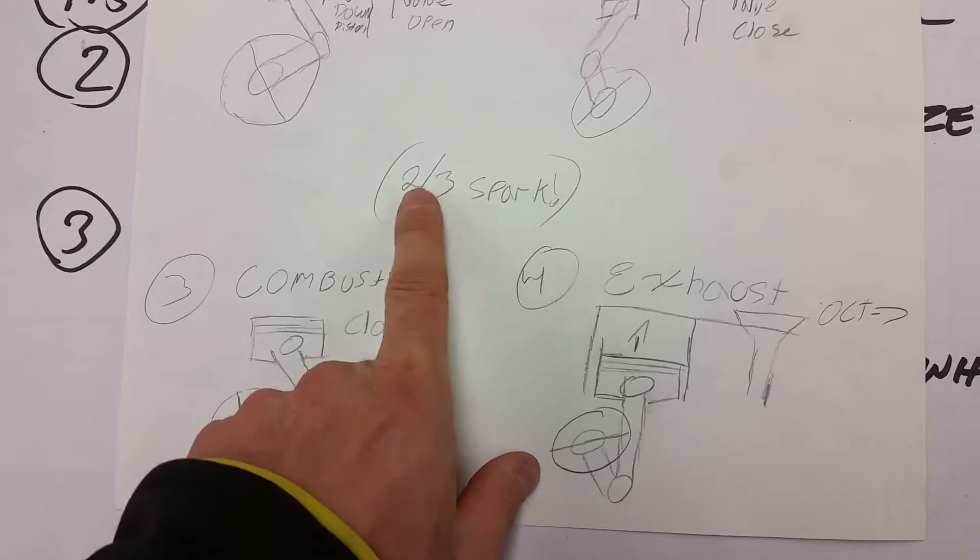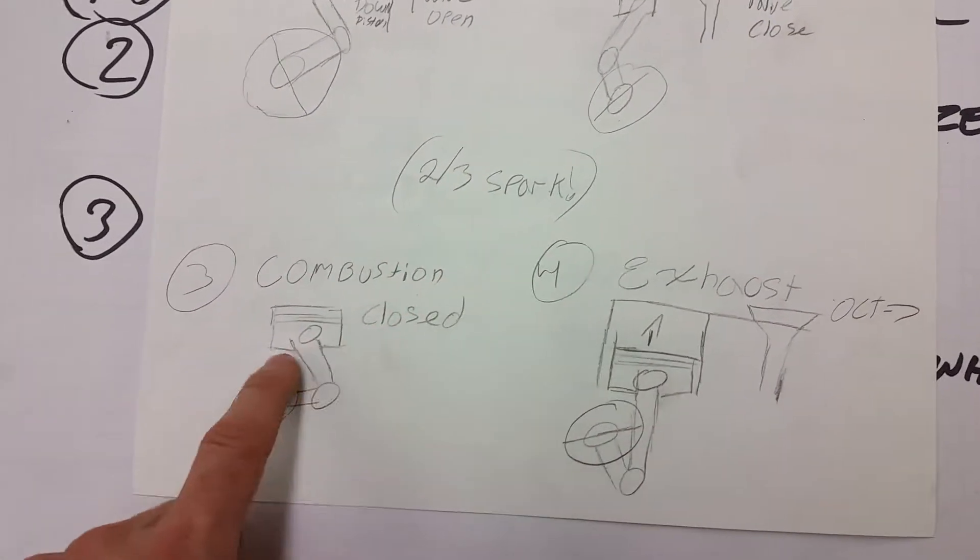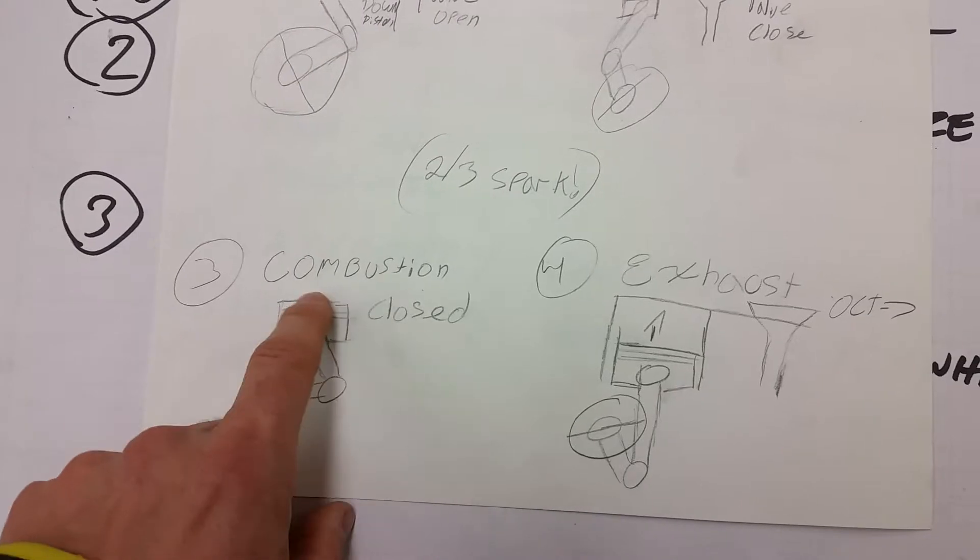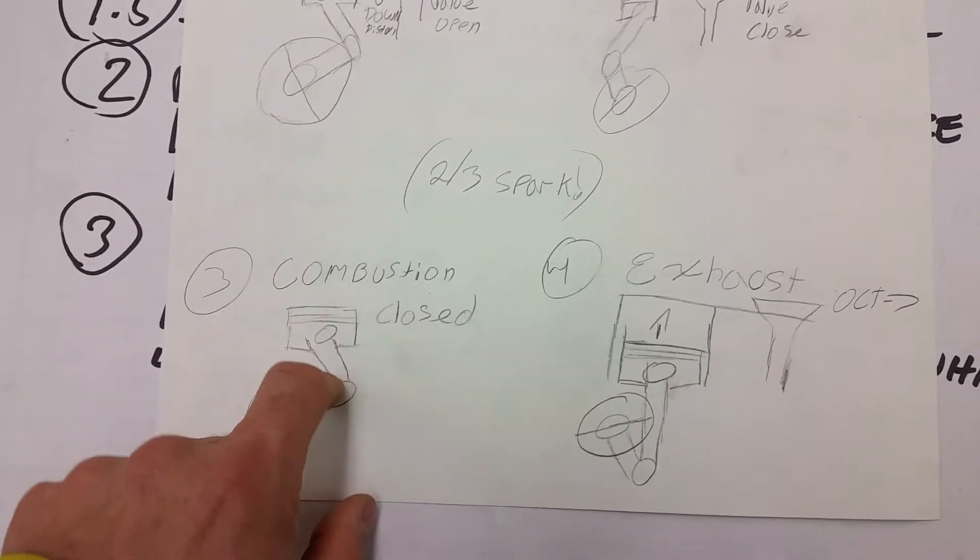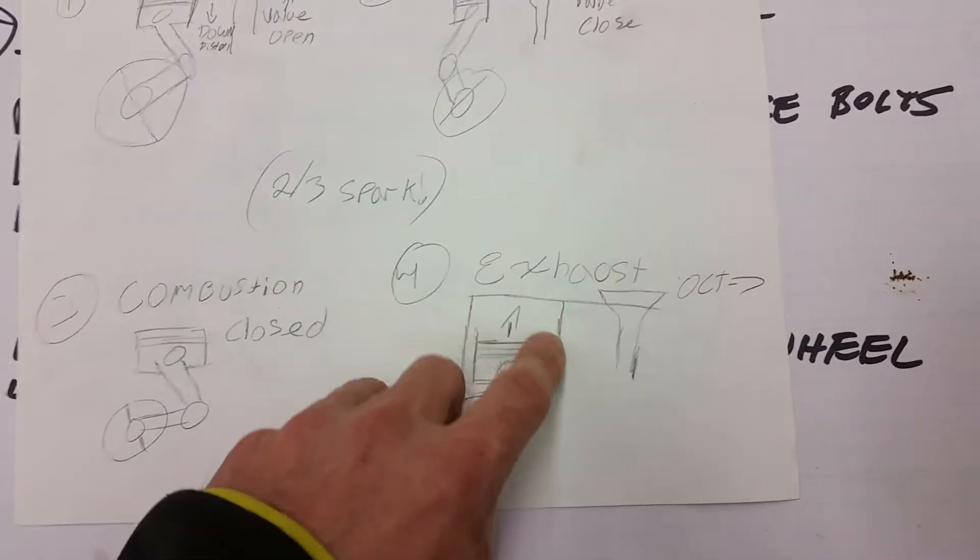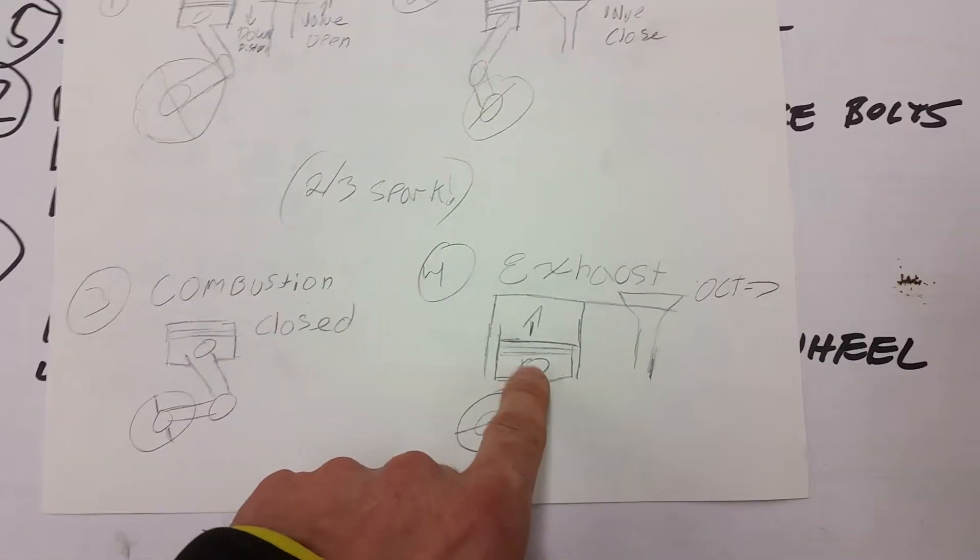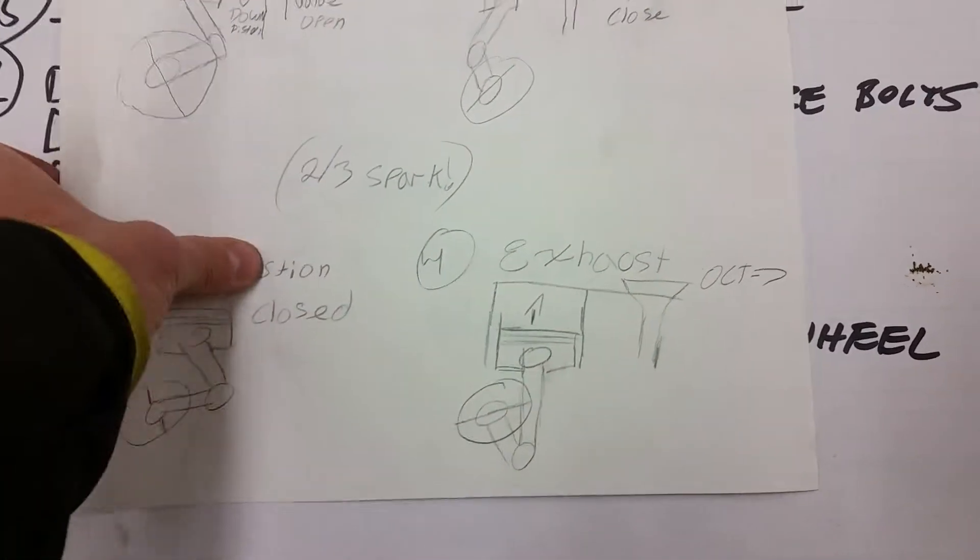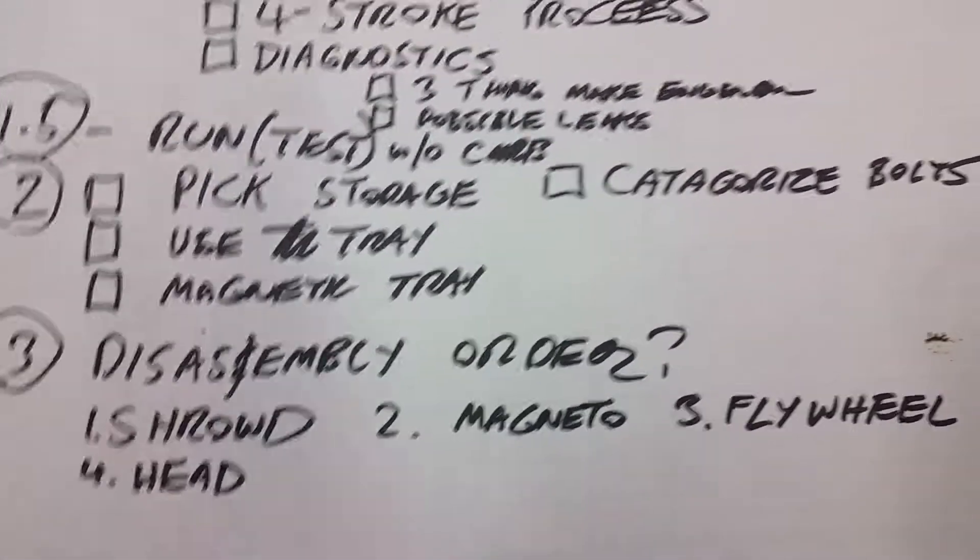In between is the spark. The third stroke down is combustion, and the valves are still closed. That's the power stroke, it makes it go around. And then the fourth stroke is you have to get rid of the air and fuel that you burned, and that's the exhaust stroke.